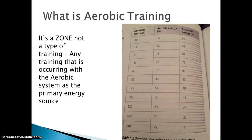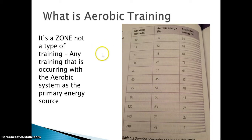So what is aerobic training? Aerobic training is a zone, not a type of training. It's really important that you're aware of that. What you might be traditionally thinking of is continuous training. Aerobic training is a zone we get to rather than a type of training, and it's any training that occurs with the aerobic system as the primary energy source.